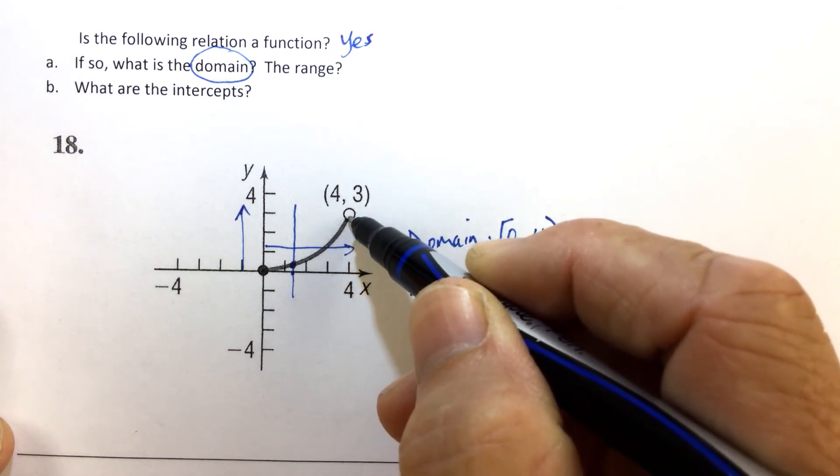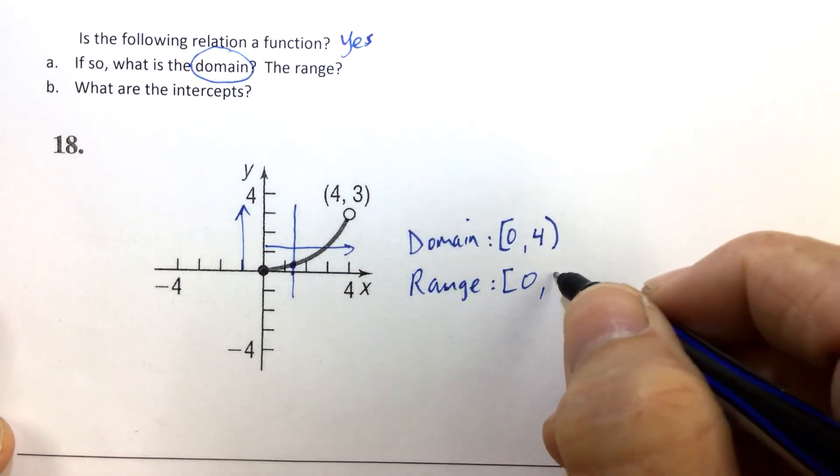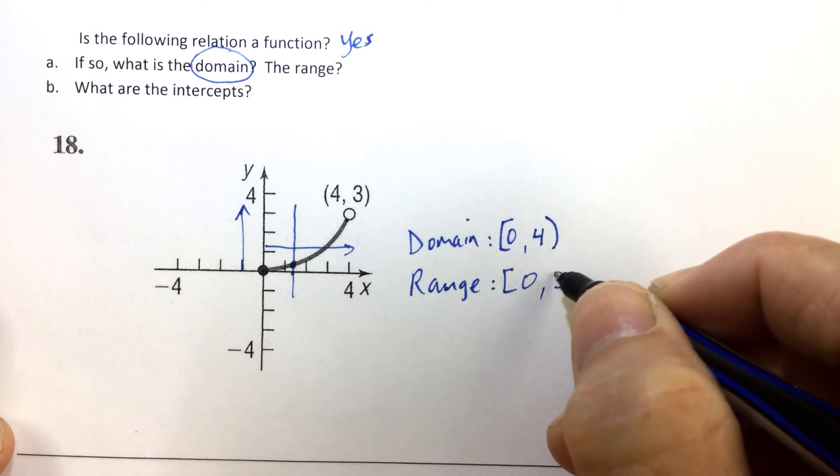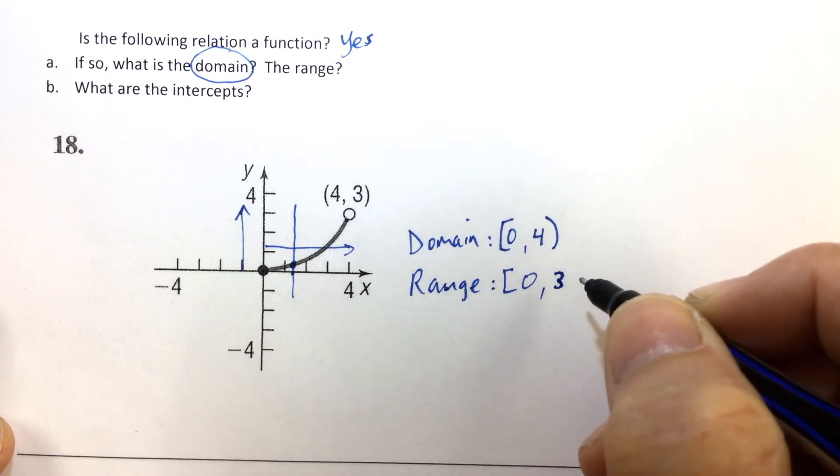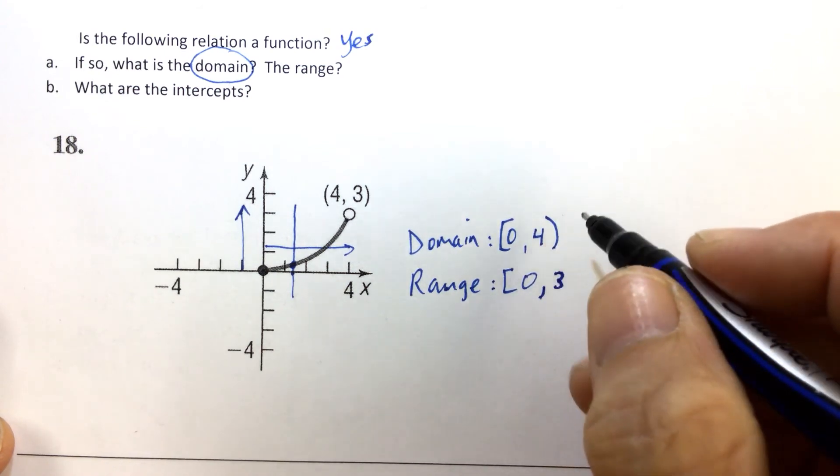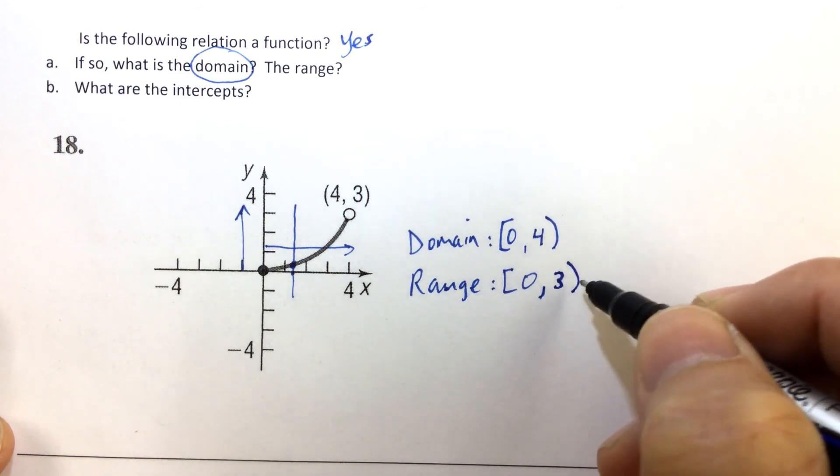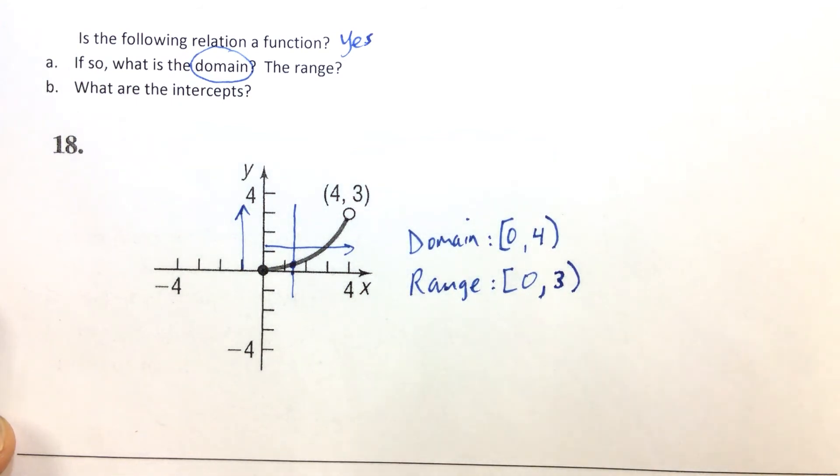and then all the way almost to 3. We get as close as we can to 3, as close as we even want to get to 3, but we don't get 3. Therefore, the range is 0 to 3, including 0, but not including 3.